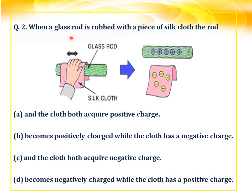Question number two: when a glass rod is rubbed with a piece of cloth, what happens to the rod? The options are: a) the rod and the silk cloth both acquire a positive charge, b) the rod becomes positively charged while the cloth has a negative charge, c) the rod and the cloth both acquire negative charge, and d) the rod becomes negatively charged while the cloth has a positive charge. When two objects like a silk cloth and a glass rod are rubbed against each other, they get charged. By convention, the rod will get positively charged whereas the cloth will be negatively charged. Hence the answer is b).